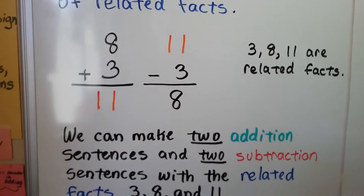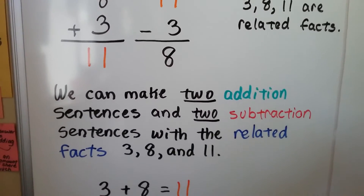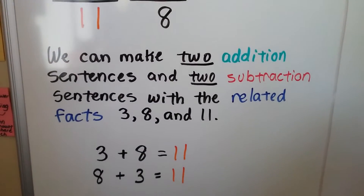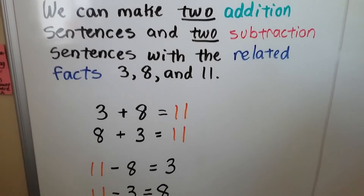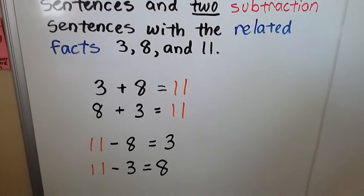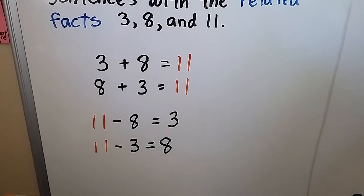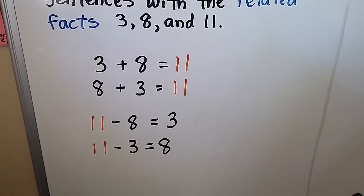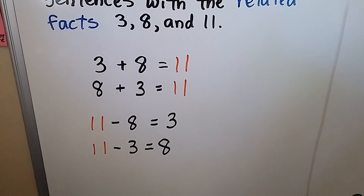We can make two addition sentences and two subtraction sentences with the related facts three, eight, and eleven. Three plus eight equals eleven. Eight plus three equals eleven.